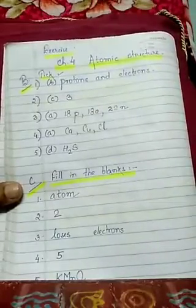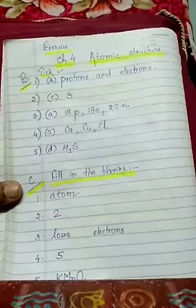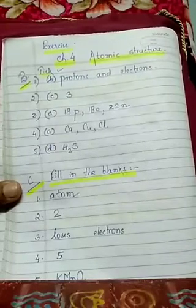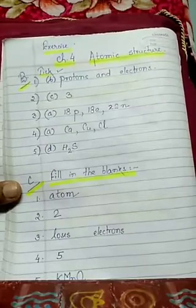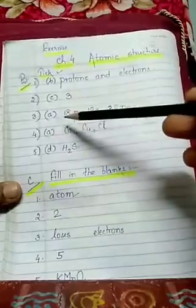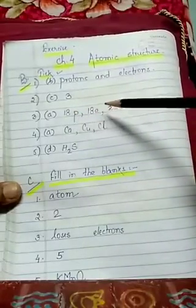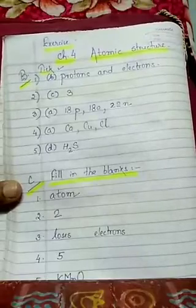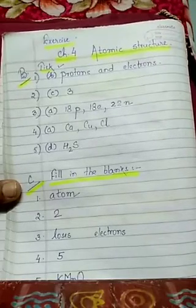Third, an atom with atomic number 18 and mass number 40 has the following arrangement — option A: 18 protons, 18 electrons, 22 neutrons. Now move to question 4: the symbol of carbon is C.